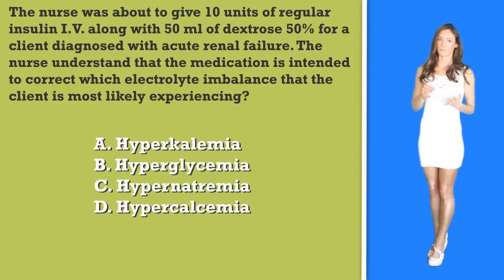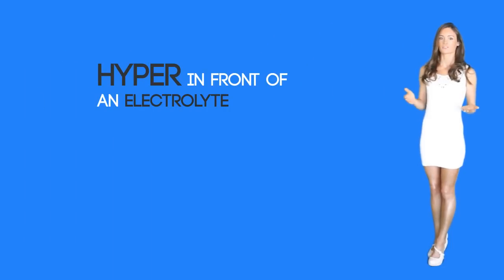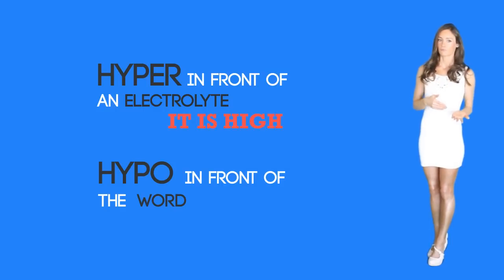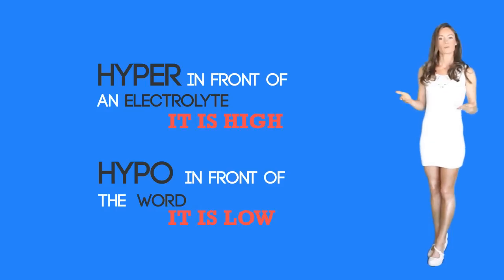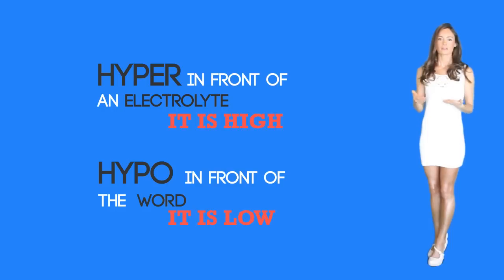There are certain tricks when approaching electrolytes. For example, if you see hyper in front of an electrolyte, this means it is high. And if you see hypo in front of a word, it means that it is low. For example, if your patient has a potassium level of 3.3, they are said to be hypokalemic.